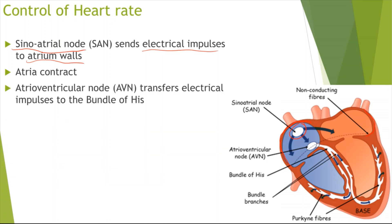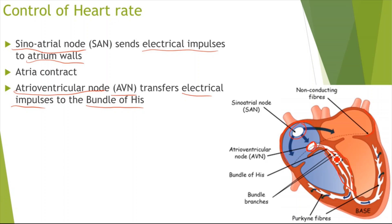What happens then is the atrioventricular node, the AVN, transfers the electrical impulses to the bundle of His. The AVN receives the impulses from the SAN and transfers them to the bundle of His, which is located inside the septum of the heart.